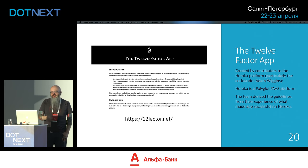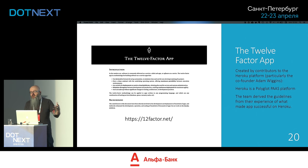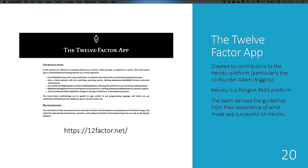12factor.net is where you can go and see all the principles written down. It was created by Heroku, who started out as a platform-as-a-service provider for Ruby developers. They said: some people are successful at building applications that run in our environment, some less so — what guidance can we figure out from the successful ones? The result, particularly from a guy called Adam Wiggins who was working at Heroku at the time, was this set of 12 factors.